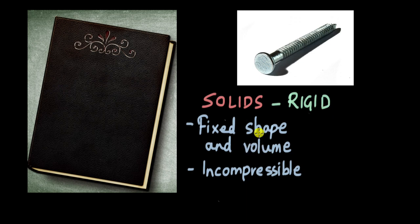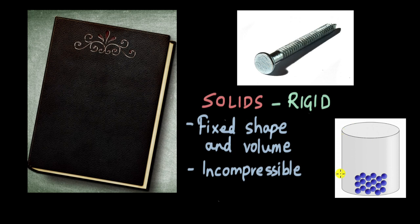Why do solids have these properties? How are the particles arranged which give rise to these properties? You can think of a jar with an ice cube or any solid block inside it. The particles in a solid are arranged in a fixed pattern. Strong forces hold them together, so they cannot really leave their positions — they are not free to move. That's what gives solids their fixed shape and volume. The only movements they make are tiny vibrations. Finally, there are no spaces between the particles in a solid, so we cannot compress it — that's what makes it incompressible.